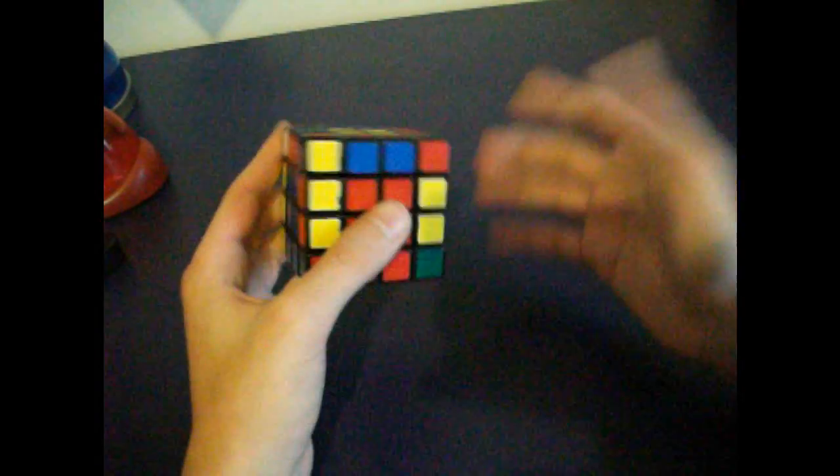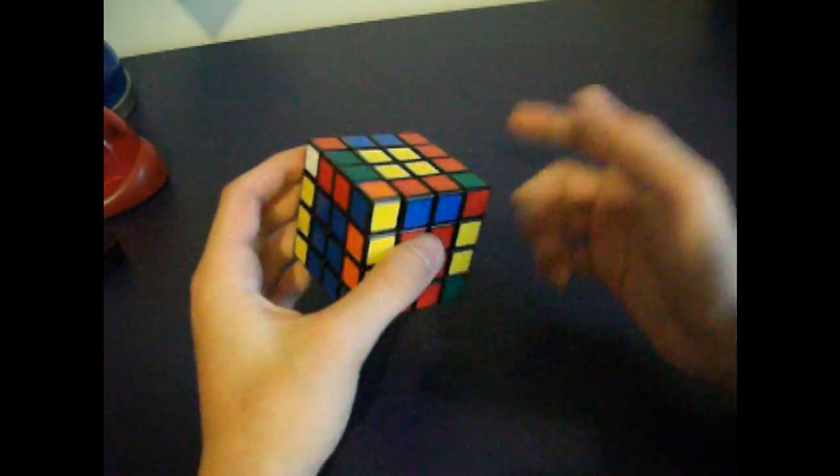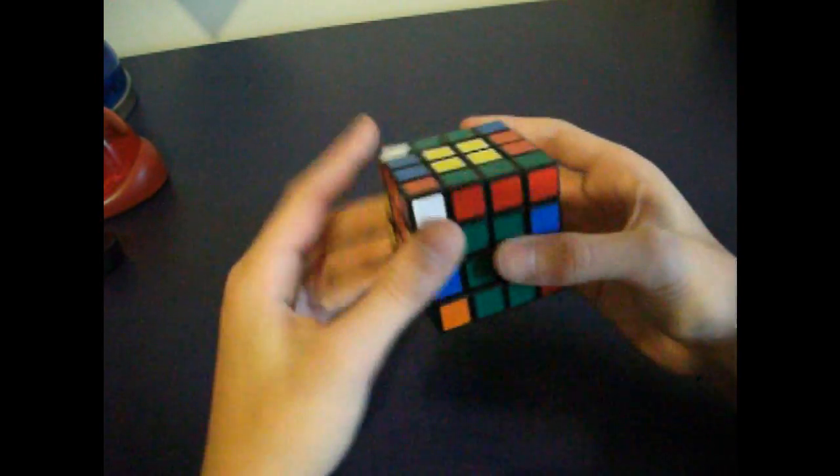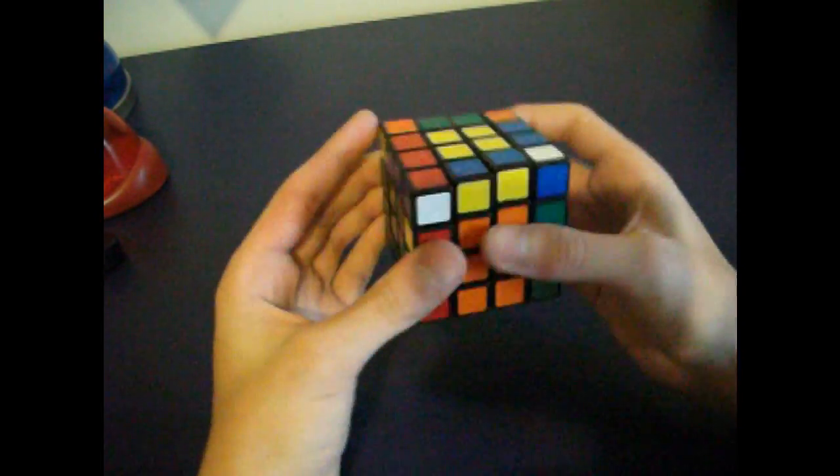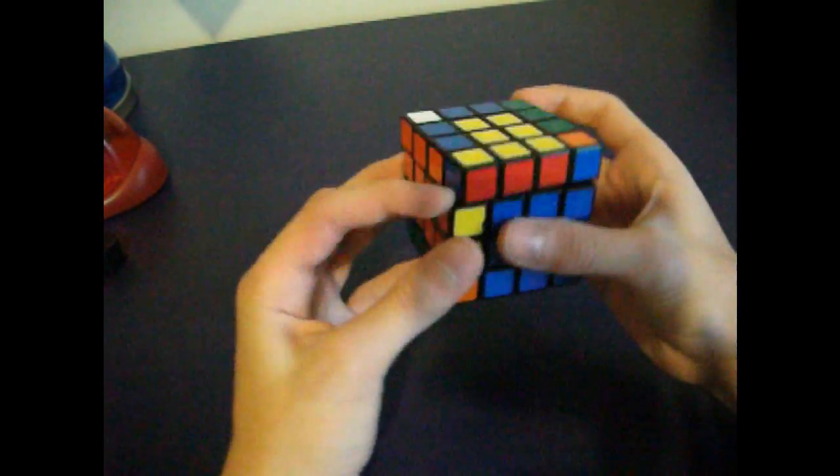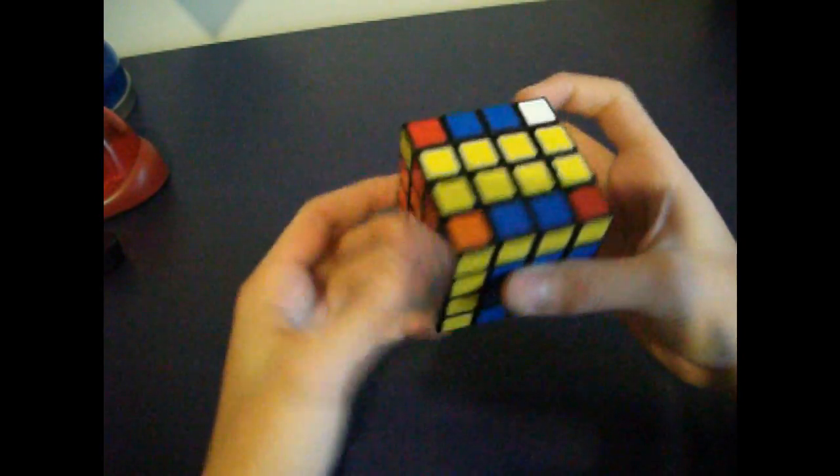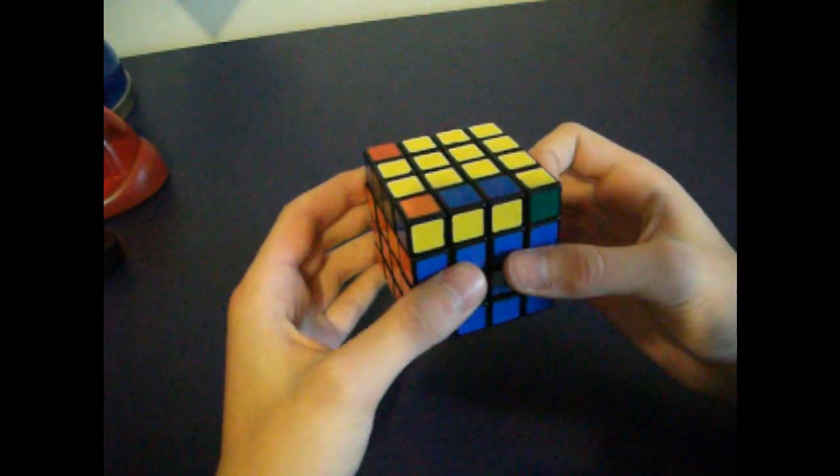Now you just continue solving it like a 3x3, because you already have your cross down. So I see this is F2L, and then I see this, and then I see this, and then I see this, and I see this, and I have parity.